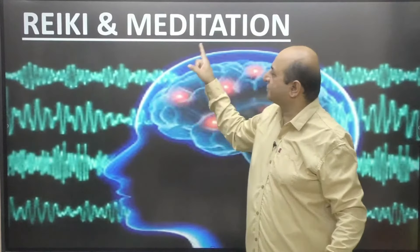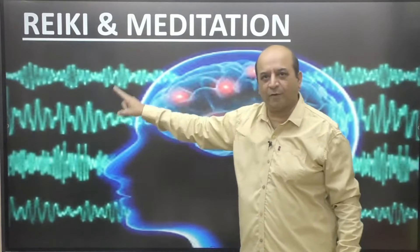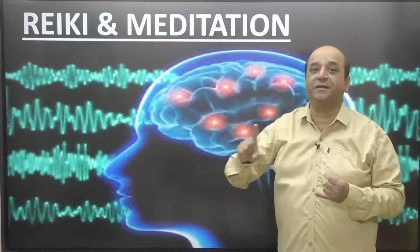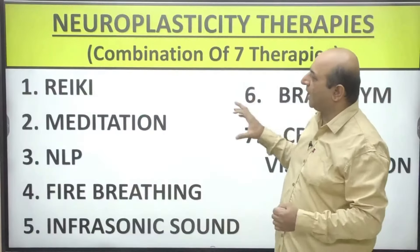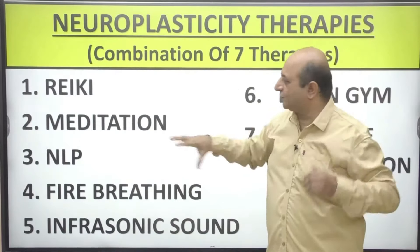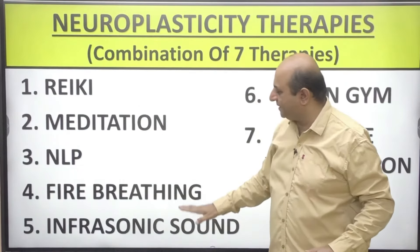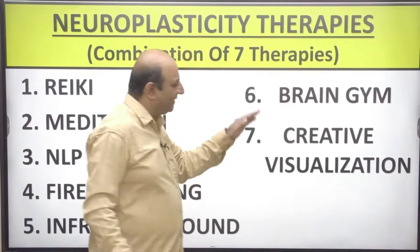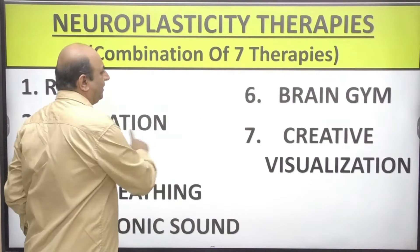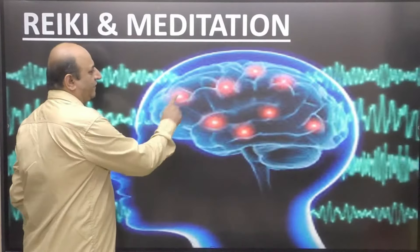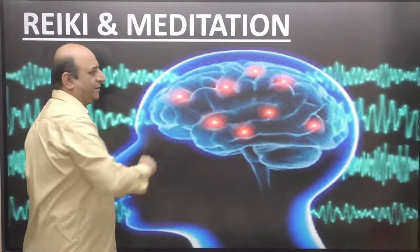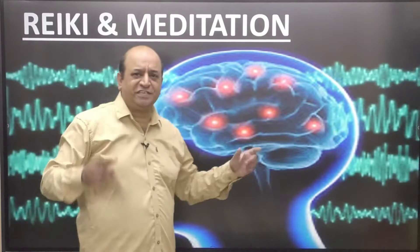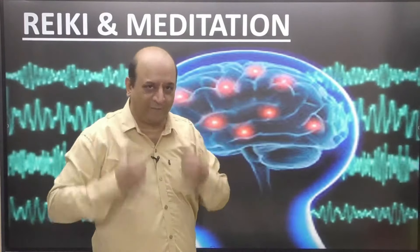For that, we have to lower the brain waves from beta to alpha. Reiki and meditation help lower your brain waves from beta to alpha. Alpha brain waves are 7 to 14 ripples per second. When you are in the lower brain waves, NLP, breathing, infrasonic sound, brain gym, and creative visualization start working on different sections of the brain — represented by red dots — and they actually change the structure and function of your brain.